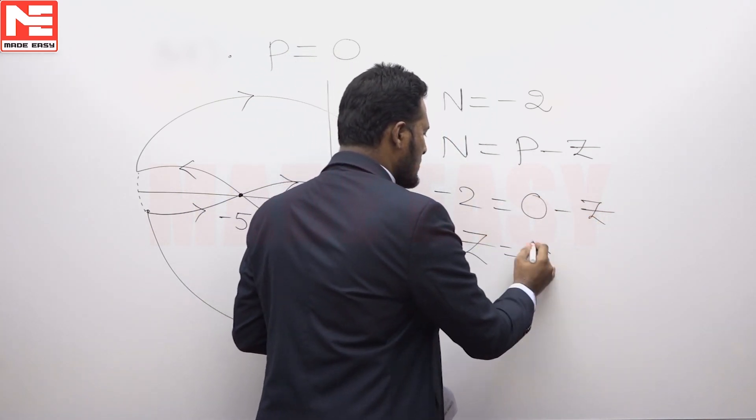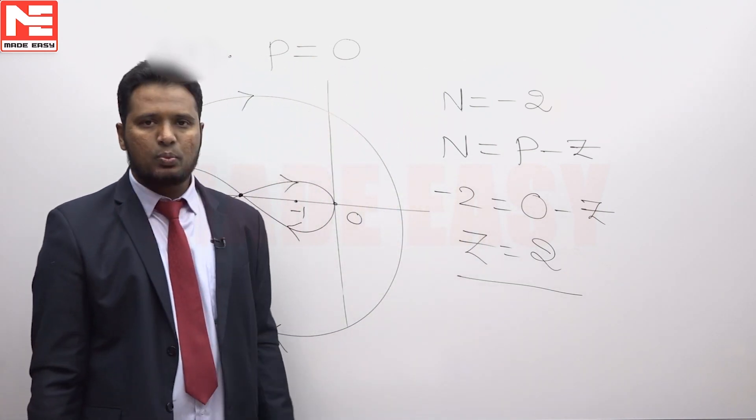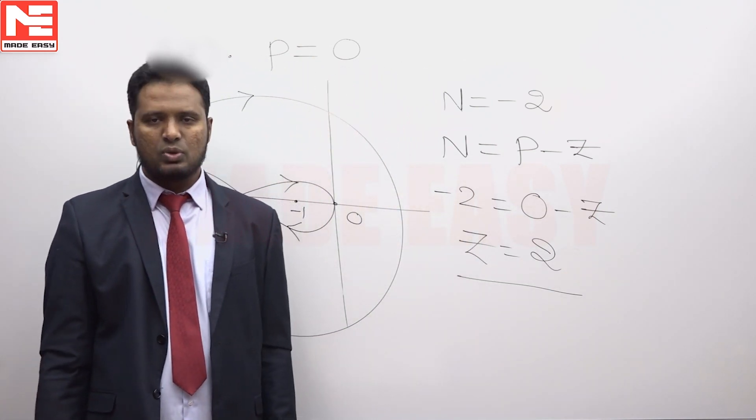Z is equal to 2. Z stands for number of closed-loop poles in the right side of S-plane. So, answer 2.